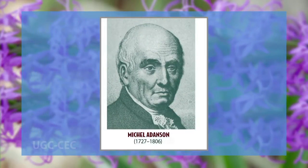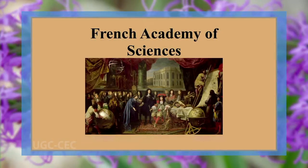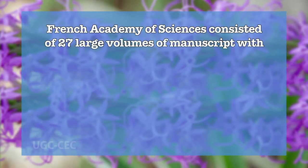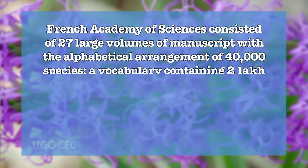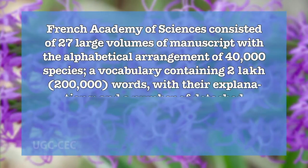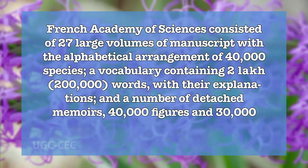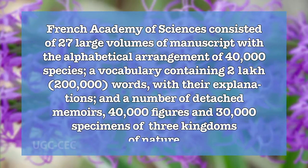In 1774, Adanson submitted to the French Academy of Sciences an immense work extending to all known beings and substances. It consisted of 27 large volumes of manuscripts with an alphabetical arrangement of 40,000 species, a vocabulary containing 200,000 words with their explanations, and a number of detached memoirs, 40,000 figures, and 30,000 specimens of the three kingdoms of nature. The committee entrusted with inspecting this enormous work strongly recommended Adanson to separate and publish all that was peculiarly his own, leaving out what was merely compilation. He rejected this advice and the huge work was never published.